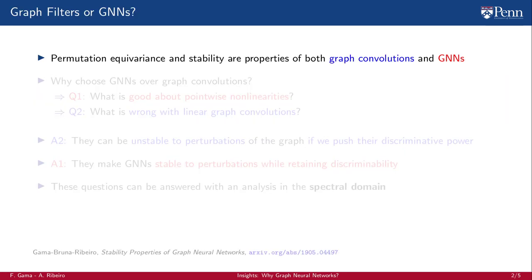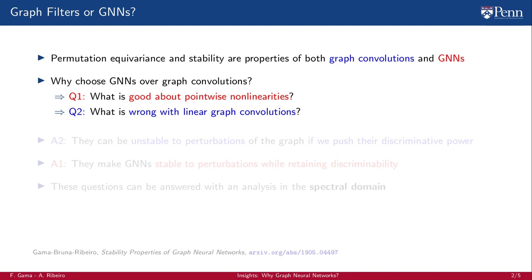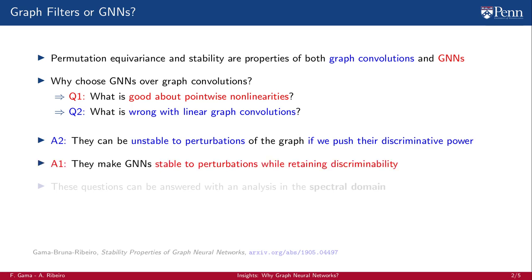Permutation equivariance and stability are properties of both graph convolutions and GNNs. Then why bother adding pointwise nonlinearities to create a GNN? More concretely, what is good about pointwise nonlinearities, or similarly, what is wrong with linear graph convolutions? The problem with linear graph convolutions is that they can be unstable to perturbations of the graph if we push their discriminative power. The advantage of adding pointwise nonlinearities is that they make GNNs stable to perturbations while retaining discriminability.